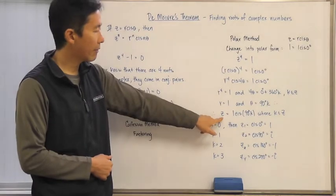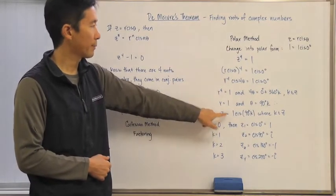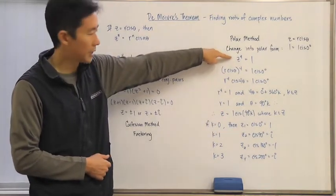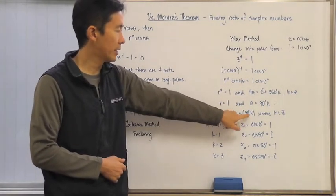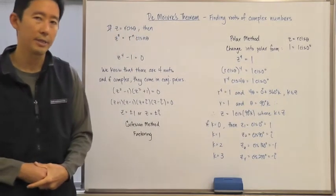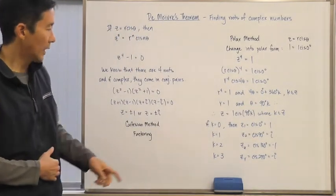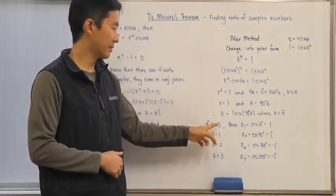And therefore, I know that whatever the solution is for this particular equation, its polar form has to assume one cis of 90 degrees k, again, where k is an element of z.